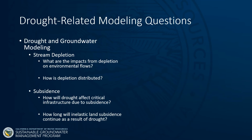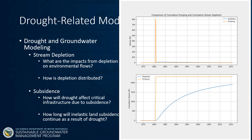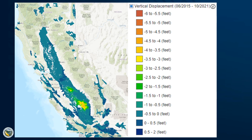Two areas where models can help us related to drought are in understanding stream depletion and where impacts might occur related to increased groundwater pumping in interconnected systems — such as how the depletion is distributed and how long the depletion will take to occur. The other area is land subsidence, where we can look at how drought might affect critical infrastructure due to subsidence and how long inelastic land subsidence can continue as a result of the drought.